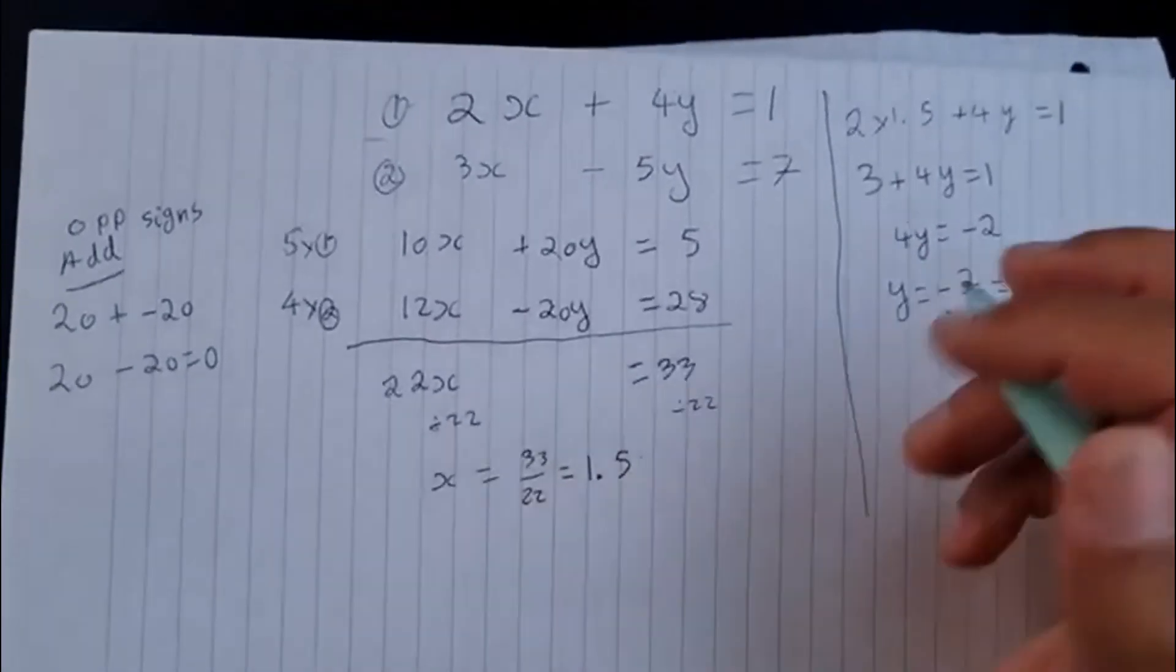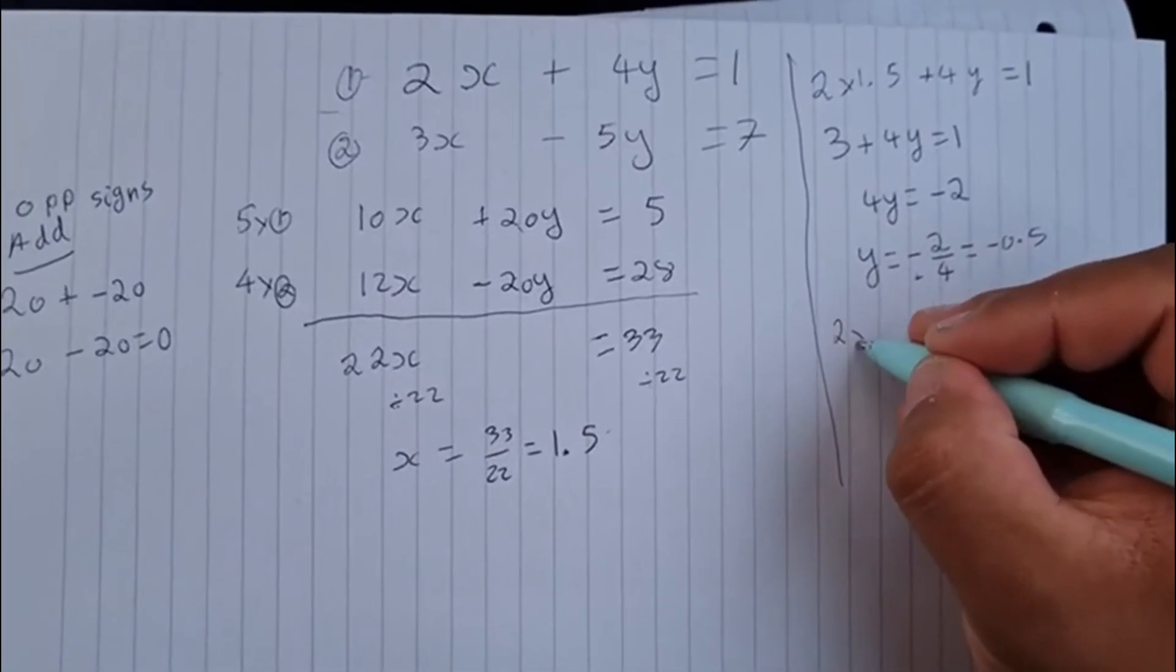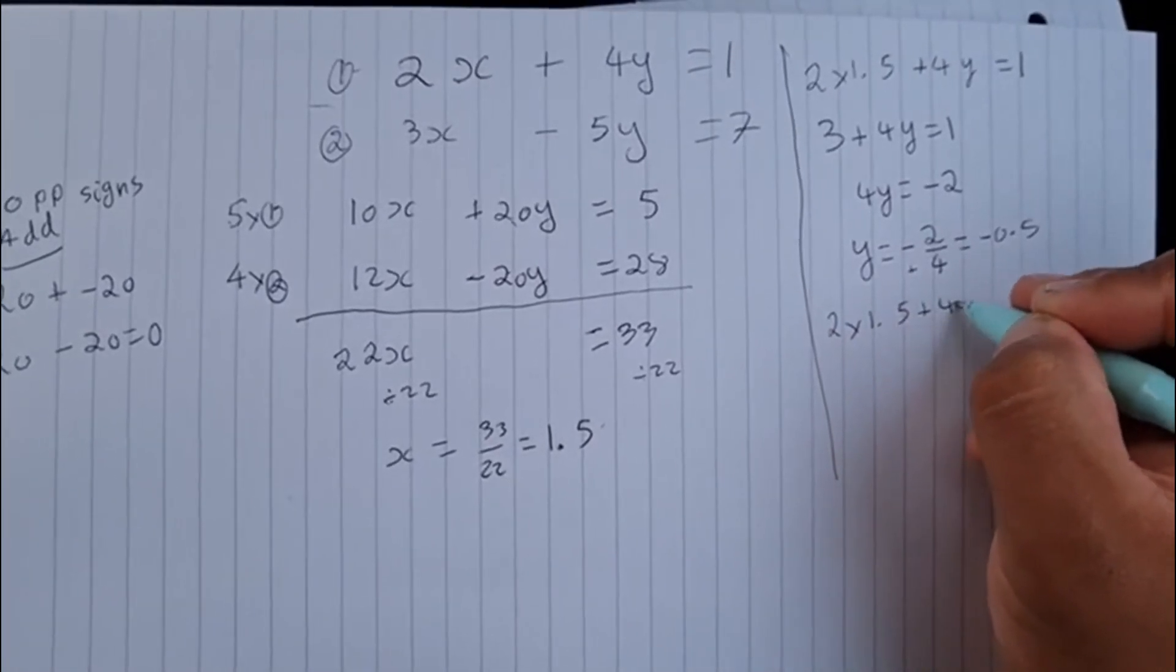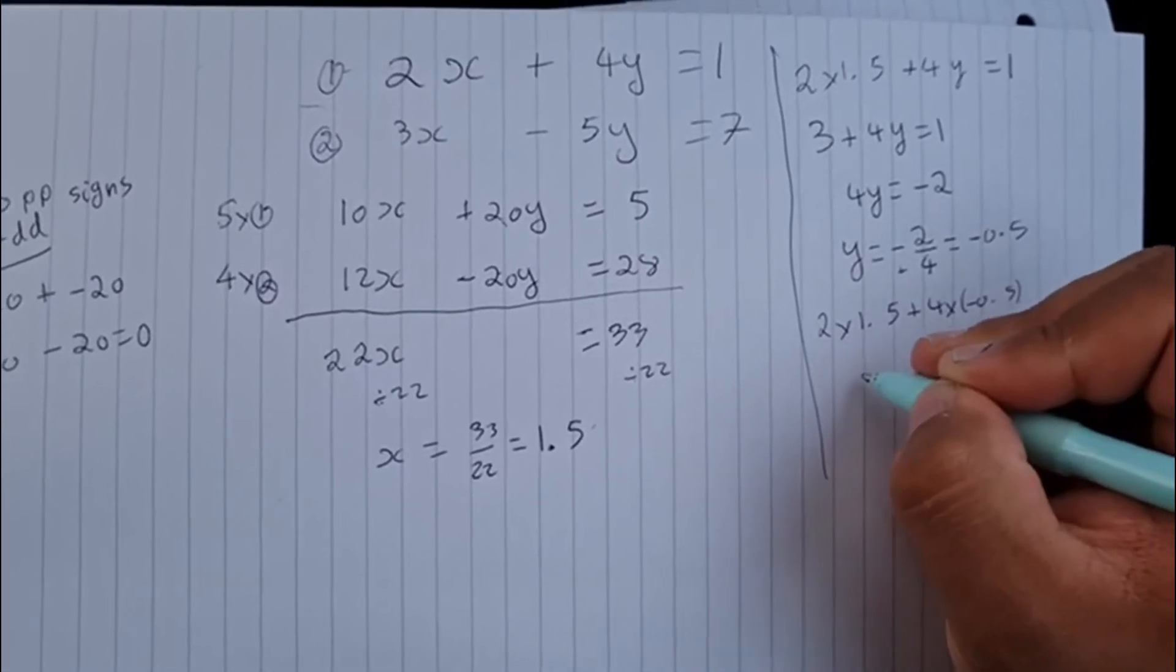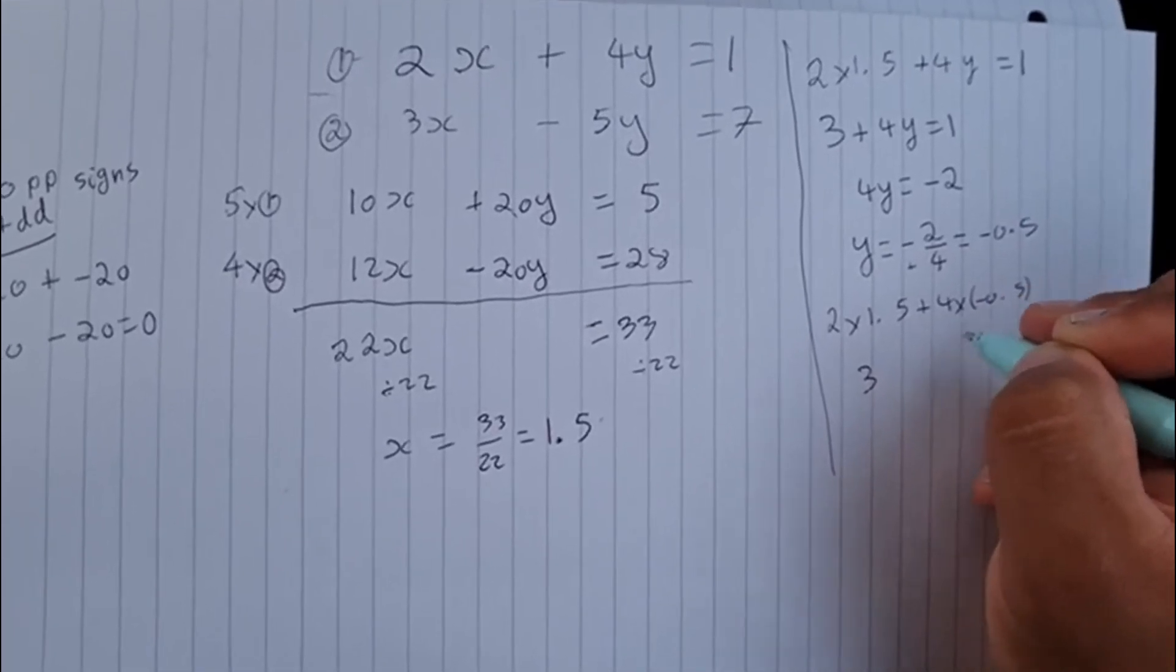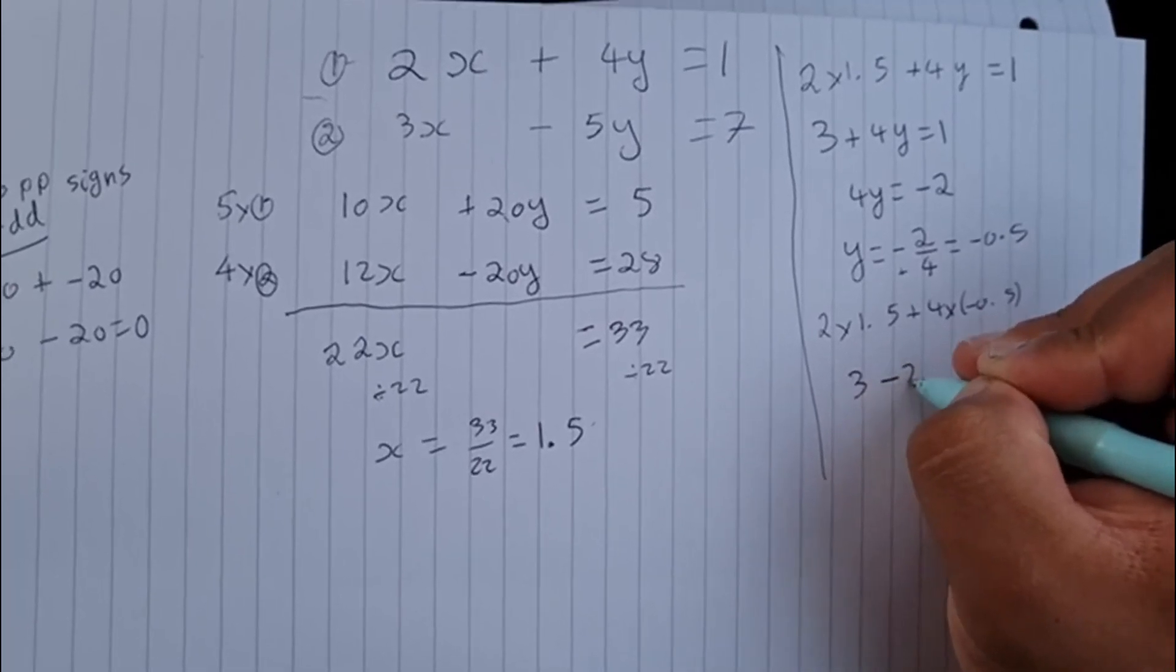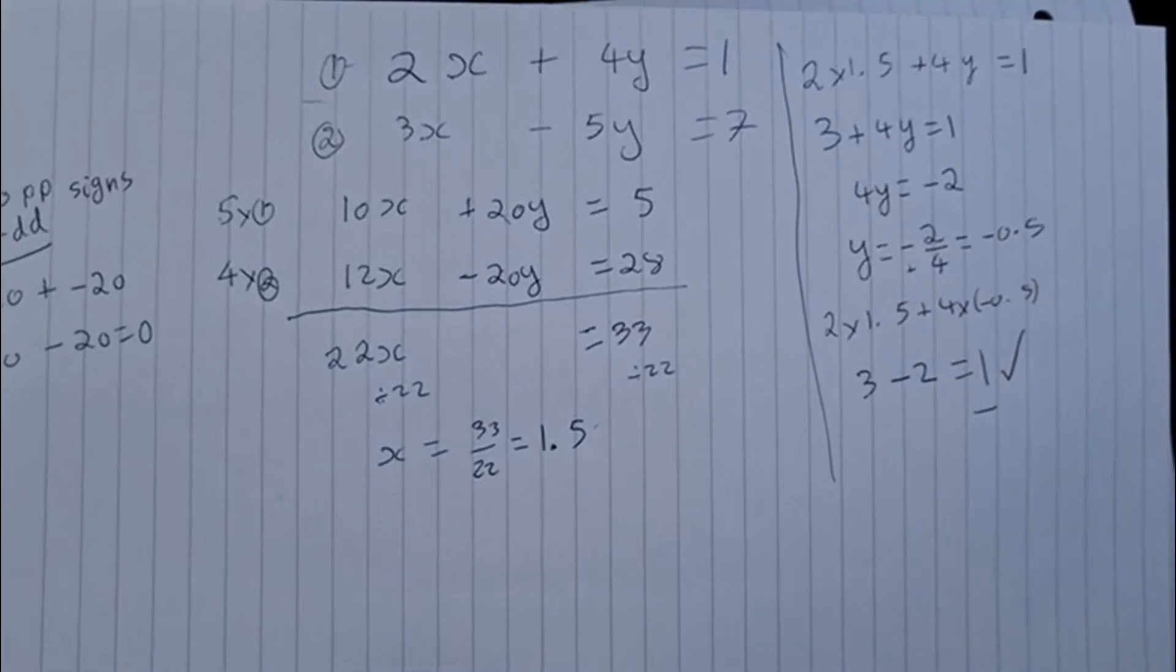And to verify this, I can substitute back into my first equation. 2 times 1.5 plus 4 times minus 0.5 will give me 3 plus 4 times minus 0.5. Plus times a minus is a minus. 4 times 0.5 is 2, so I get minus 2, which indeed gives me 1, which is correct. And that is how I would answer that question.